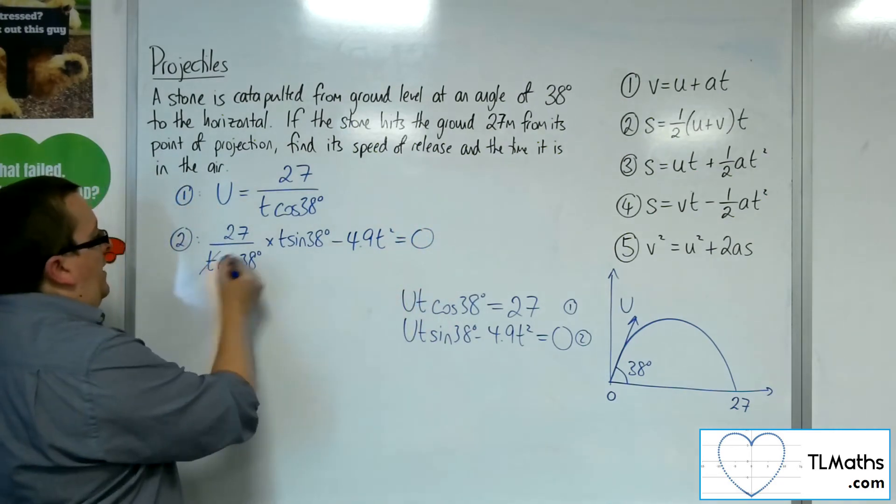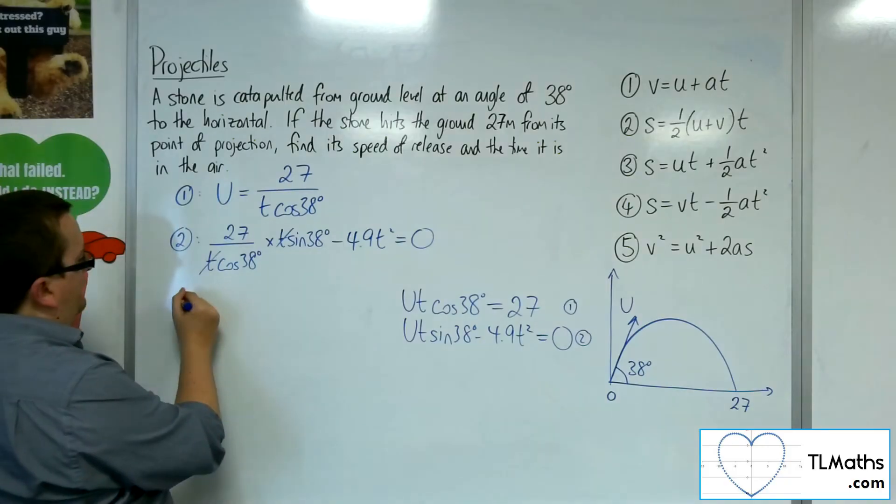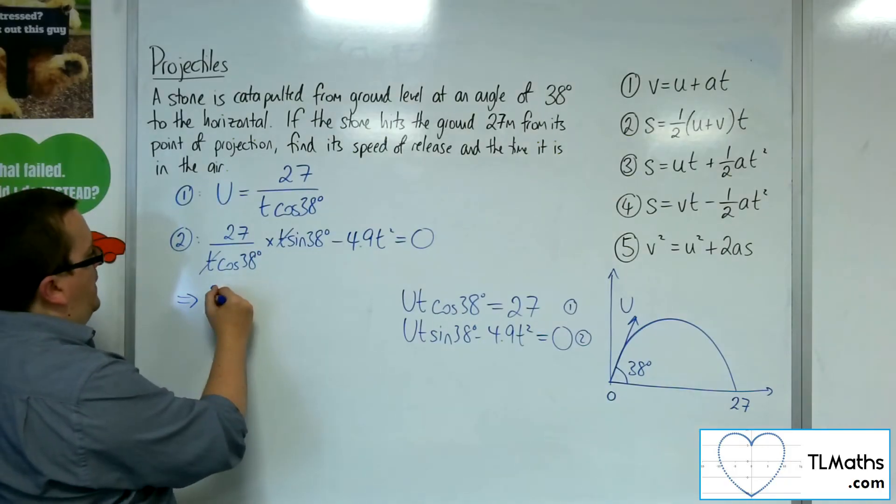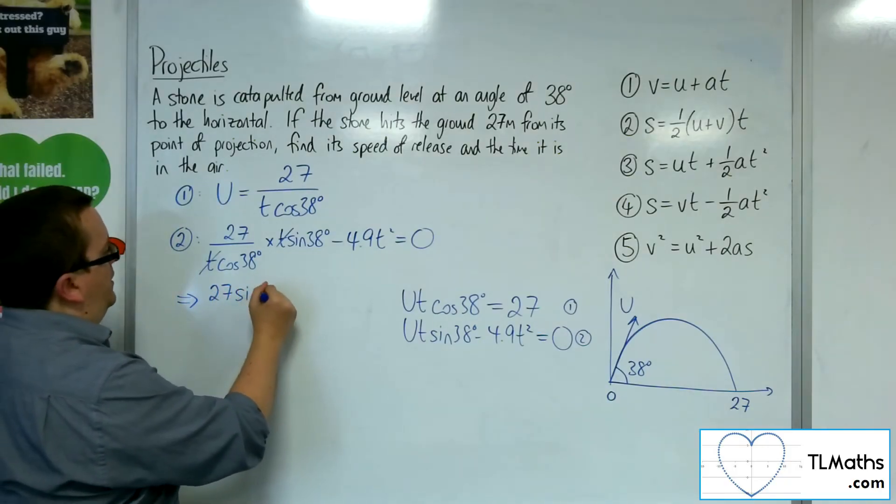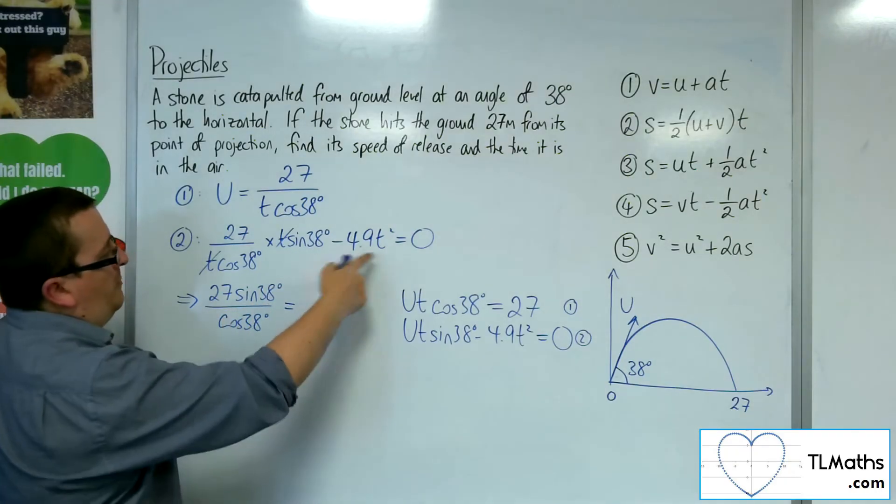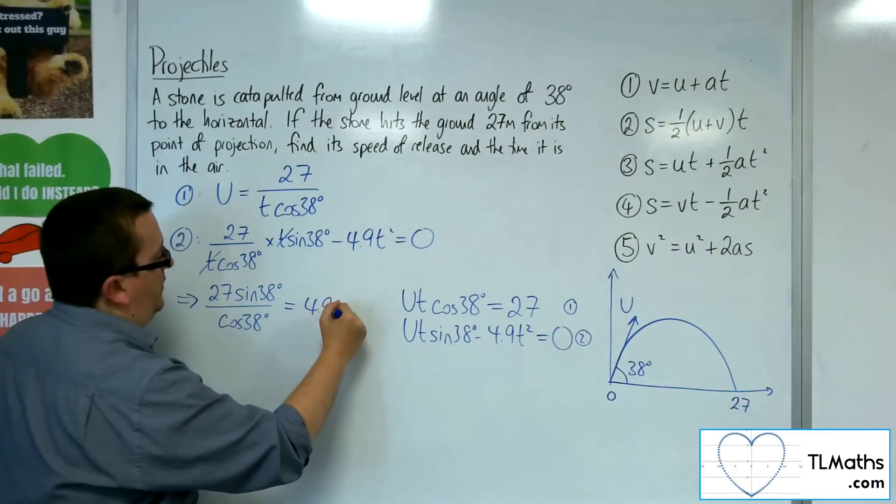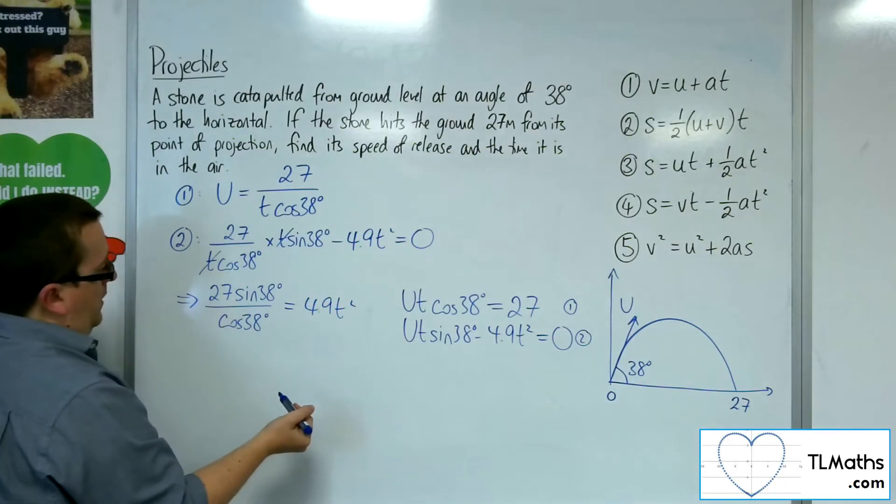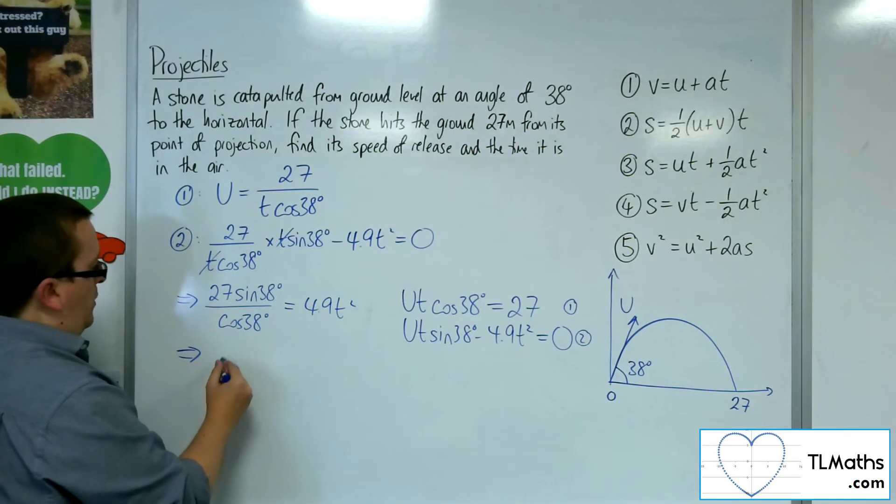So the t's here will cancel out. So I can simplify that fraction to 27 sine 38 over cos 38. And what I'm going to do is I'm going to add the 4.9t squared to both sides. I can divide both sides by the 4.9.